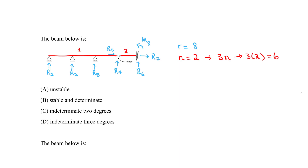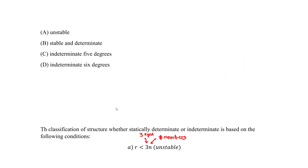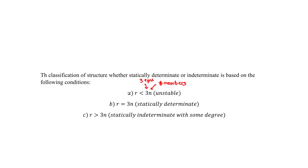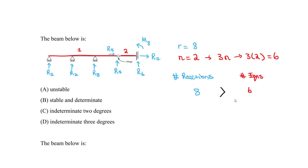Now we compare: on the left side, the number of reactions is 8; on the right side, the number of equations is 6. Since 8 is greater than 6 — reactions exceed equations — the beam is statically indeterminate. The degree of indeterminacy is 8 minus 6, which equals 2 degrees.